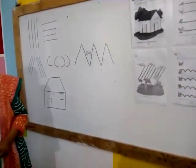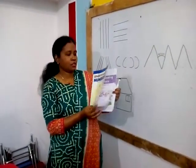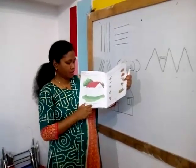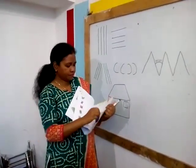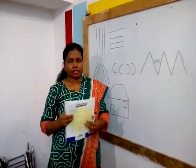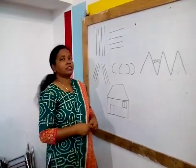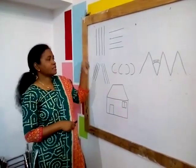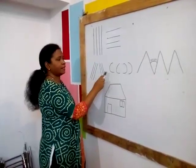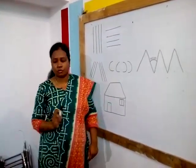Now children, you have this book — 'Understanding Numbers.' So you will do page number 6 to 11 with the help of your parents. Now children, after learning standing line, sleeping line, slanting line and curve, we will write 1 to 20.